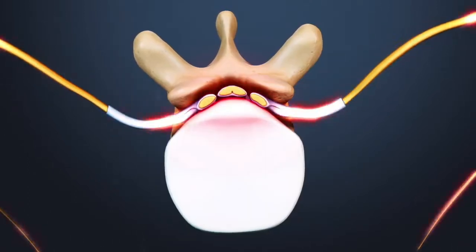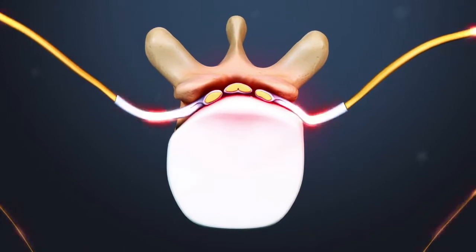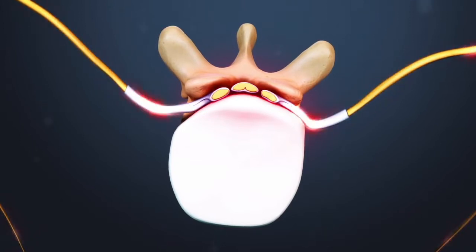If a thoracic disc herniates both back into the spinal cord and to the side, called a centrolateral herniation, symptoms may include a combination of radiating pain and myelopathy.